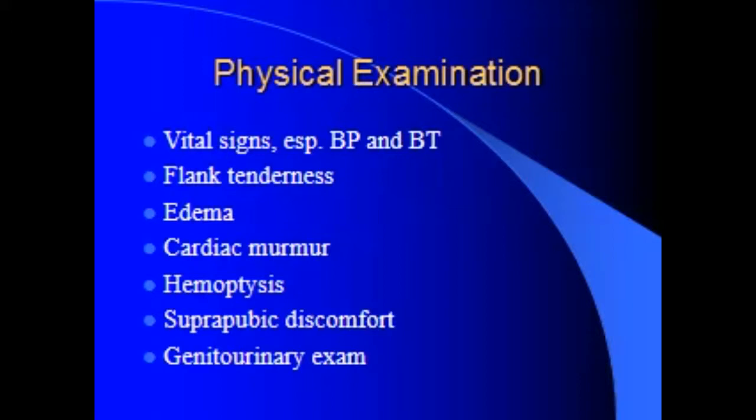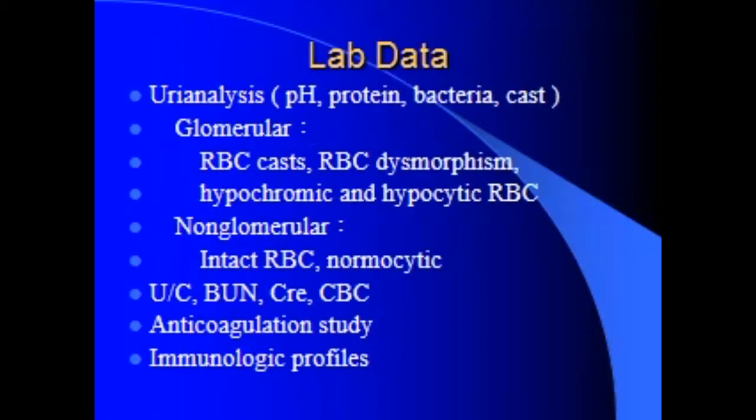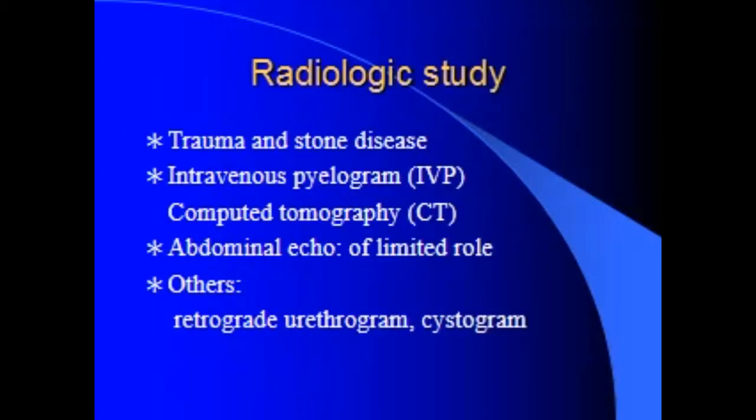History taking – Past history: previous episodes, recent food and drug ingestion, exercise, instrumentation, menstruation, dysuria, associated bladder irritability or flank pain. Time of hematuria: initial suggests urethritis or stricture or meatal stenosis.